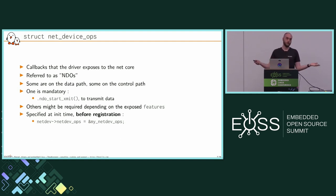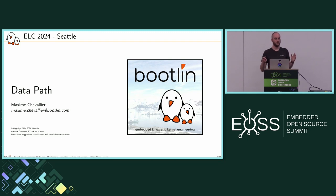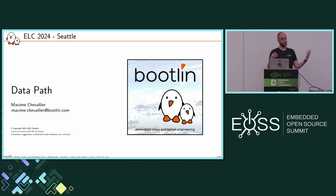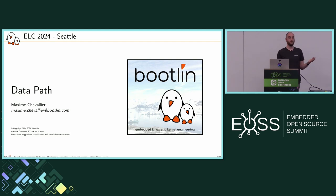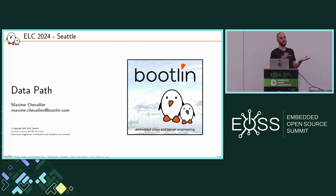NDOs are generic — the same set of operations exists for Ethernet devices, Wi-Fi devices, CAN devices, and so on. You are not expected to implement all of them, but at minimum implement the one used to send data outward. You specify them before registering your device. Now let's talk about the data path — how do you send and receive actual data.